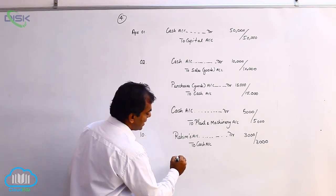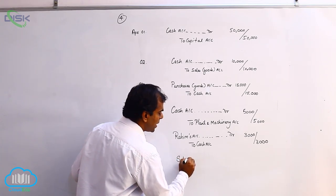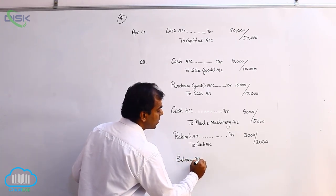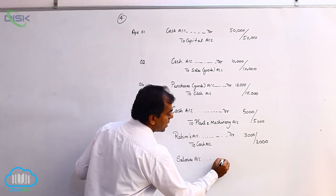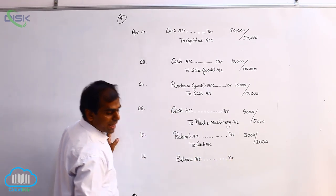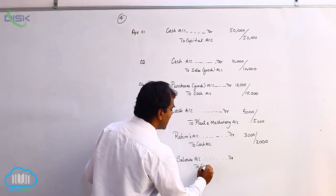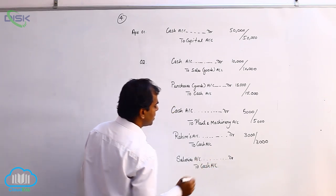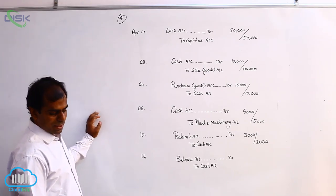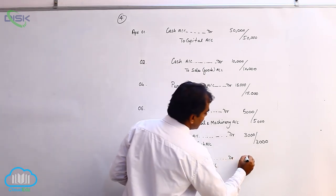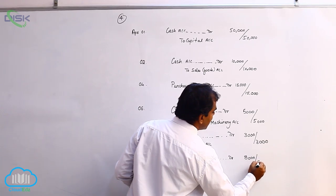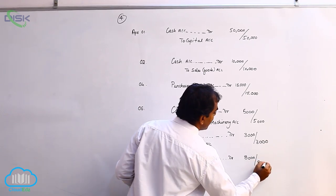The last transaction: salary paid. Salary means you are paying employees for their services — it is an expense for the business. When it is an expense, we debit all expenses according to the rule of nominal account, so salaries account debit. Paid means cash is going out — cash is a real account, credit what goes out. The journal entry: salaries account debit to cash, 8,000. Narration: being salaries paid.